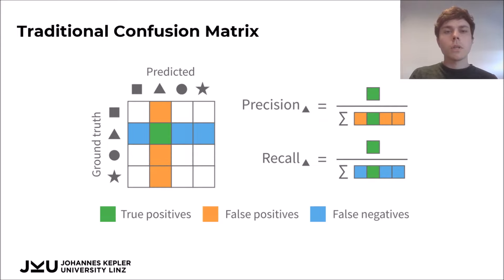Before I explain how we adapted the confusion matrix for Confusion Flow, here is a quick recap on what the traditional confusion matrix includes. The rows are the ground truth class labels of the data and the columns are the predictions. Each data item that is really of class A but predicted as class B will contribute a value of 1 to the cell for the A-B class pairing. Here you can also see how the class-specific precision and recall can be deduced from the traditional confusion matrix.